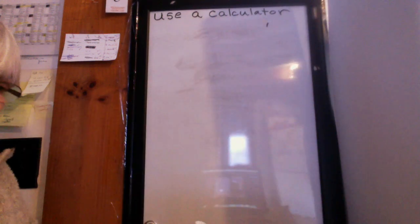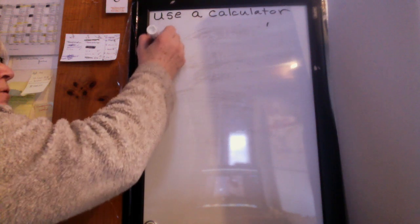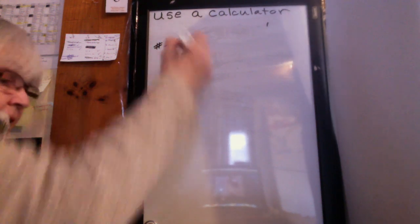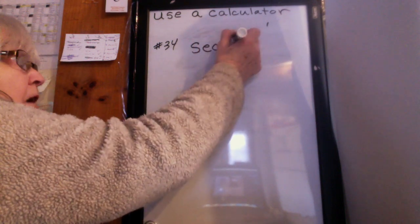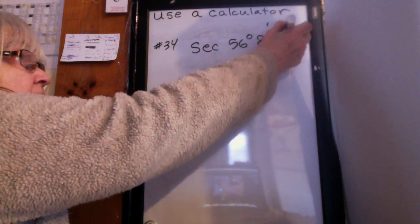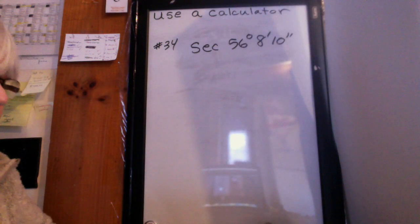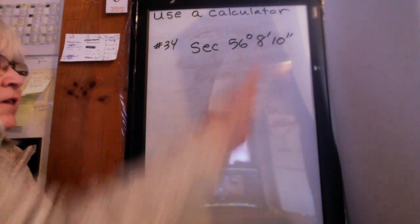Let me just erase this. And suppose I wanted to do number 34 out of the book. And it says to find the secant of 56 degrees, eight minutes, 10 seconds. So this one's a little bit longer, but again, I do the same process starting from here.